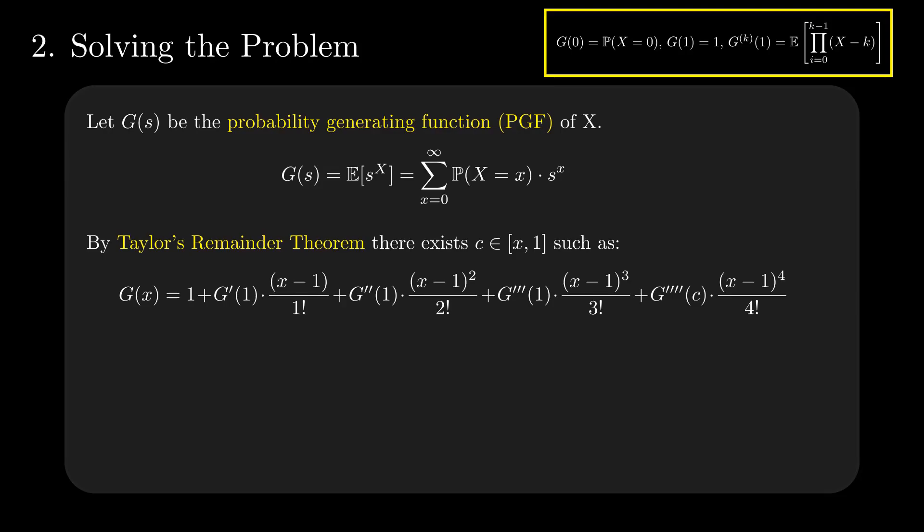Since we know some of its derivatives, the value used to compute the estimate is 1. The expansion of G of x is according to the formula on the screen. If you want to know more about the Taylor series and subsequent estimates, there are references to some handy videos in the description box.